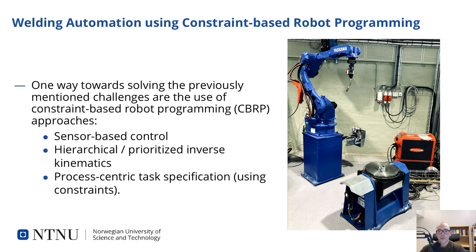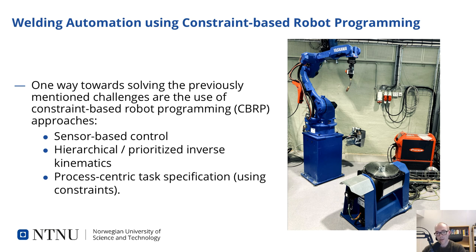To sum up, there are several challenges in Norwegian and international manufacturing when using standard and commercially available robot systems for robotic welding — that is, in small batch production in general and in the robotic welding of large offshore structures in particular. One way towards solving these challenges is the use of constraint-based robot programming, or CBRP approaches. By this I mean sensor-based control, hierarchical or prioritized inverse kinematics where some tasks have higher priority than others, as well as process-centric task specification.